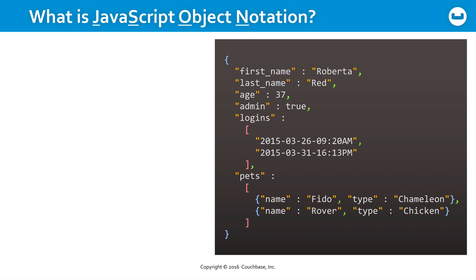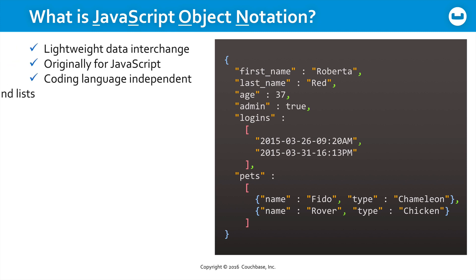So what is JavaScript Object Notation? As the name implies, it was originally created for JavaScript. But it's a lightweight data interchange format that is completely coding language independent. It's just text.